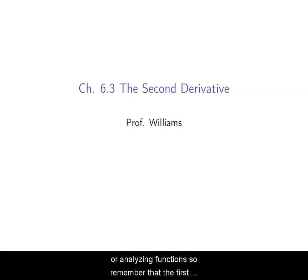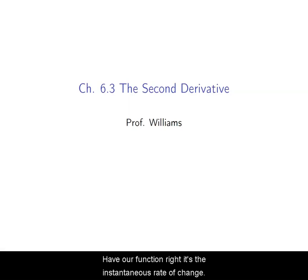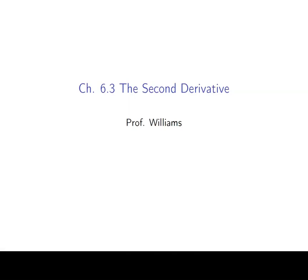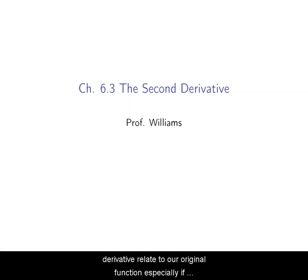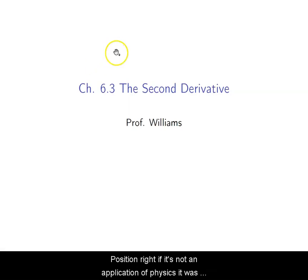Remember that the first derivative talks about the slope of the tangent line of our function — it's the instantaneous rate of change. The second derivative is the instantaneous rate of change of our first derivative. But how does the second derivative relate to our original function, especially if it's not an application of physics — if it's just a function that we're dealing with?